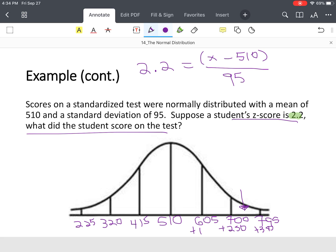We're going to do a little bit of algebra. 2.2 times 95 equals 209, which equals x minus 510. All we did was multiply both sides of the equation by 95, so these 95s cancel. Last step, we're going to add 510 to both sides of the equation, and we end up with a test score of 719.